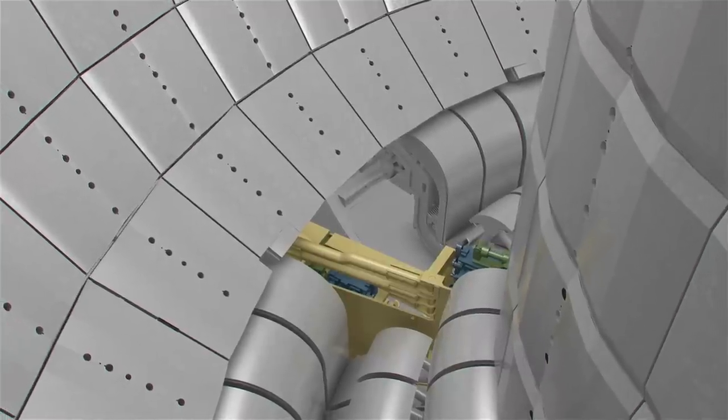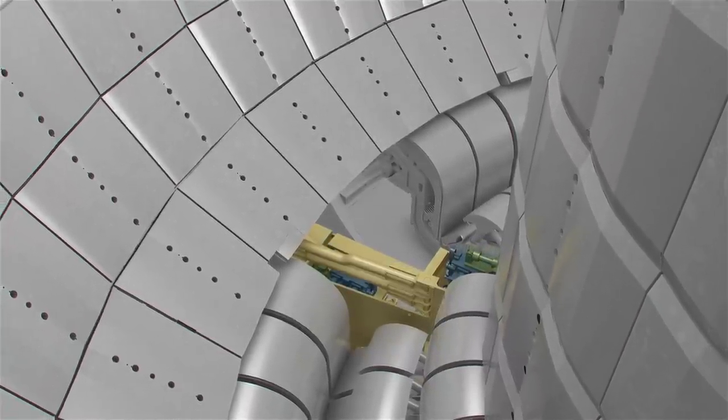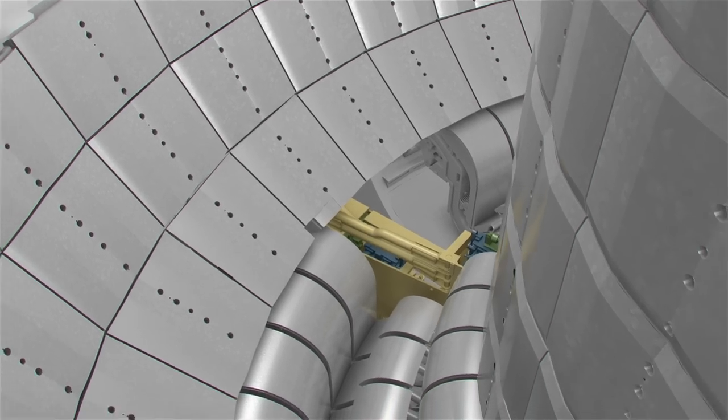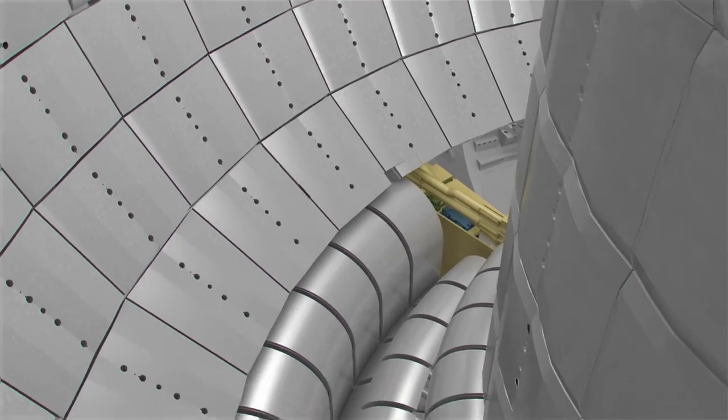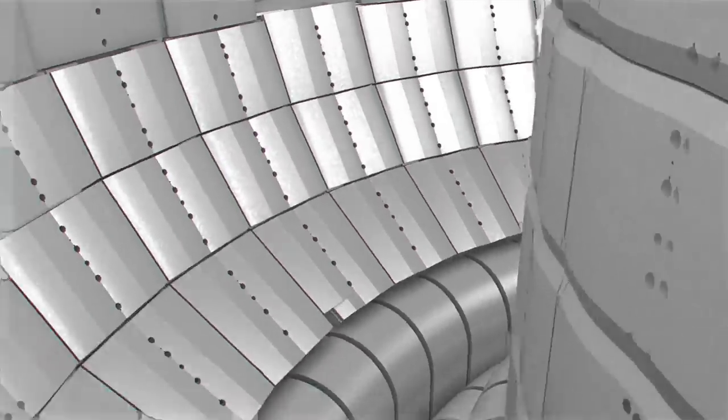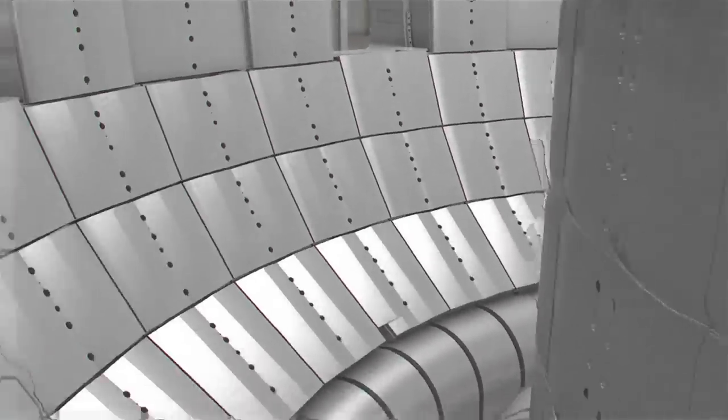The assembly crew, counting 35 people on average per shift, will work in two shifts during daytime. During the night shift, the welding performed during the day will be examined, and installed components will be checked for their leak tightness. This operation will last about two years.